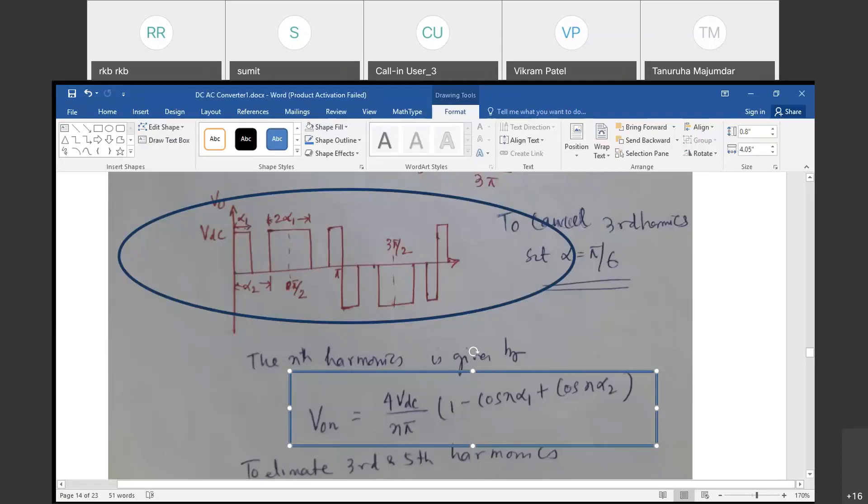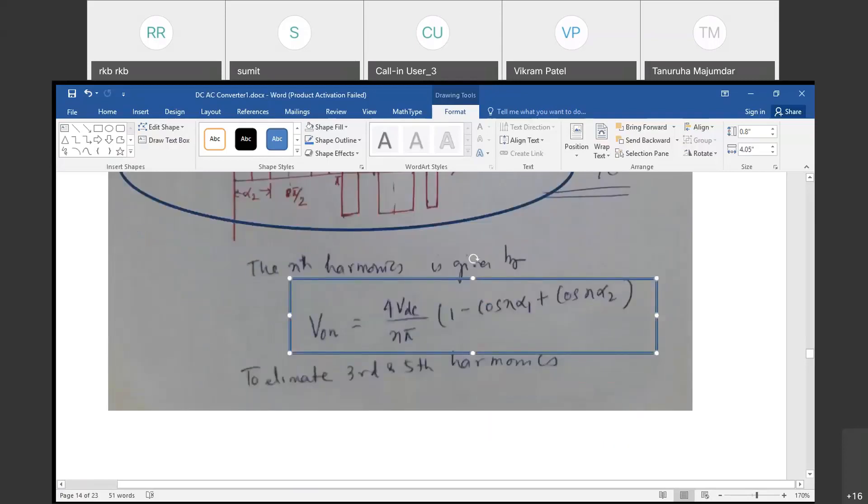This is our equation, a third order equation. If you derive the equation for this waveform, you will find that we want to reduce the third harmonic component and fifth harmonic component.